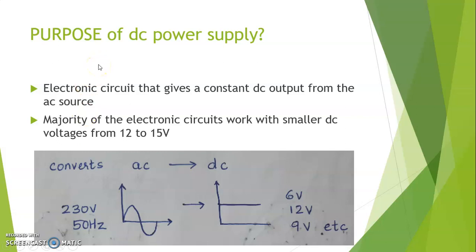Now what is the purpose of a DC power supply? It is an electronic circuit that gives constant DC output from the AC source.